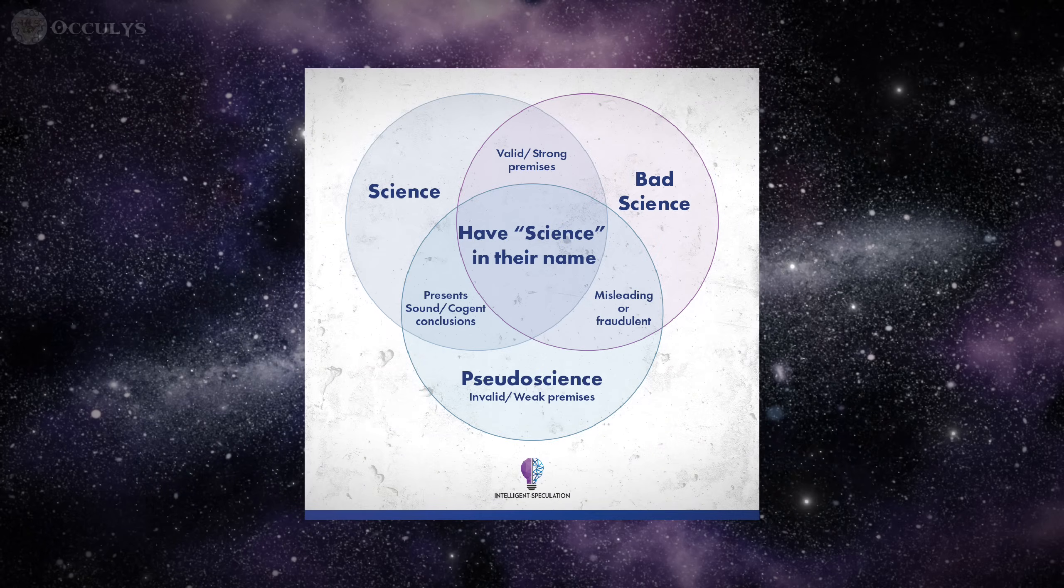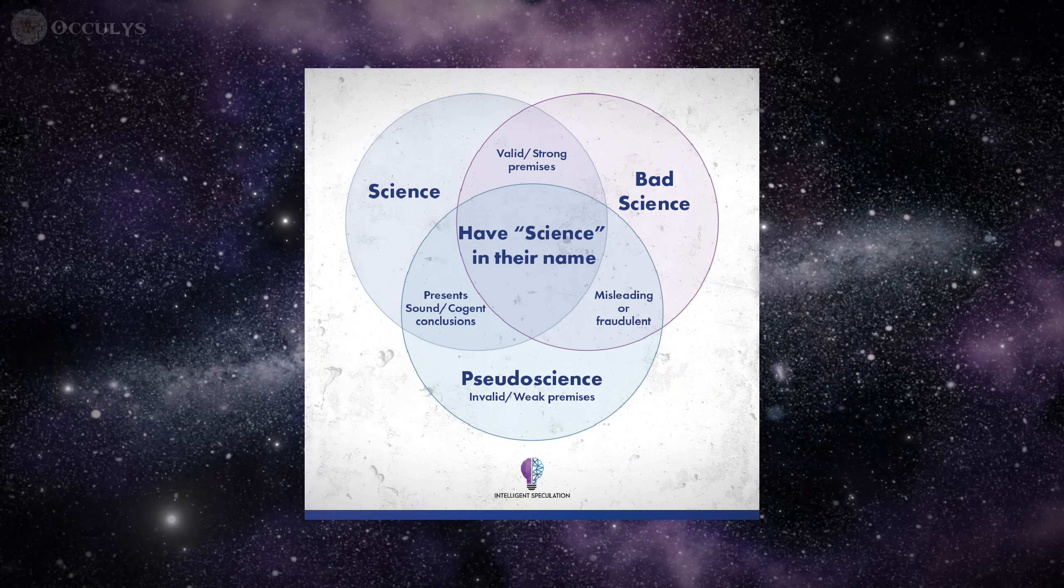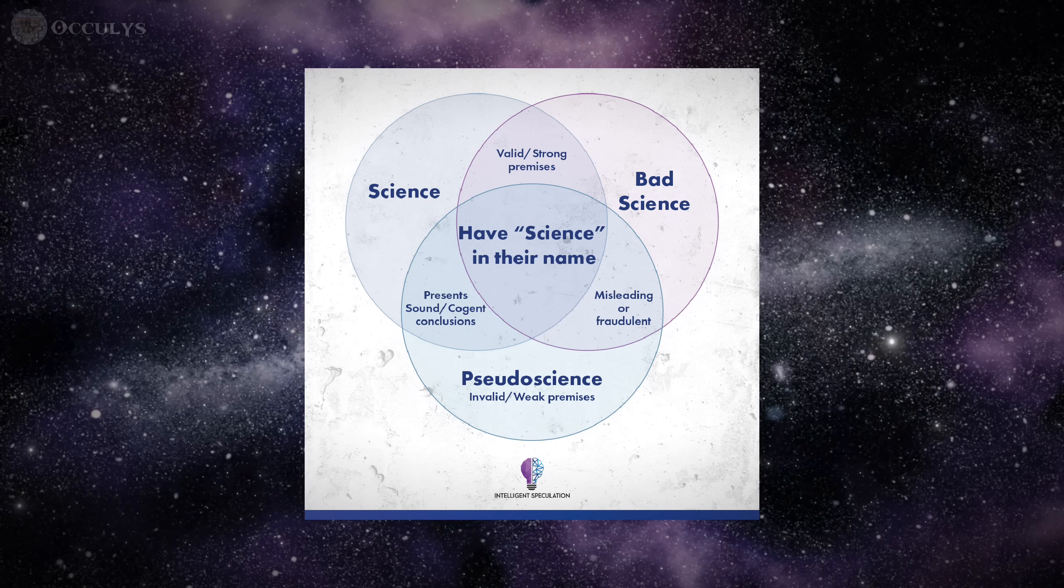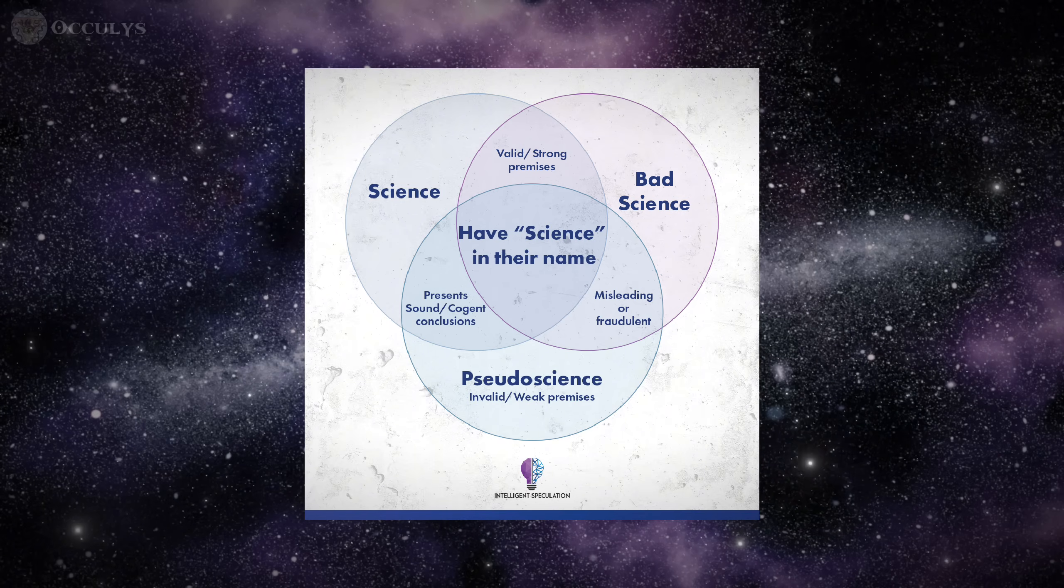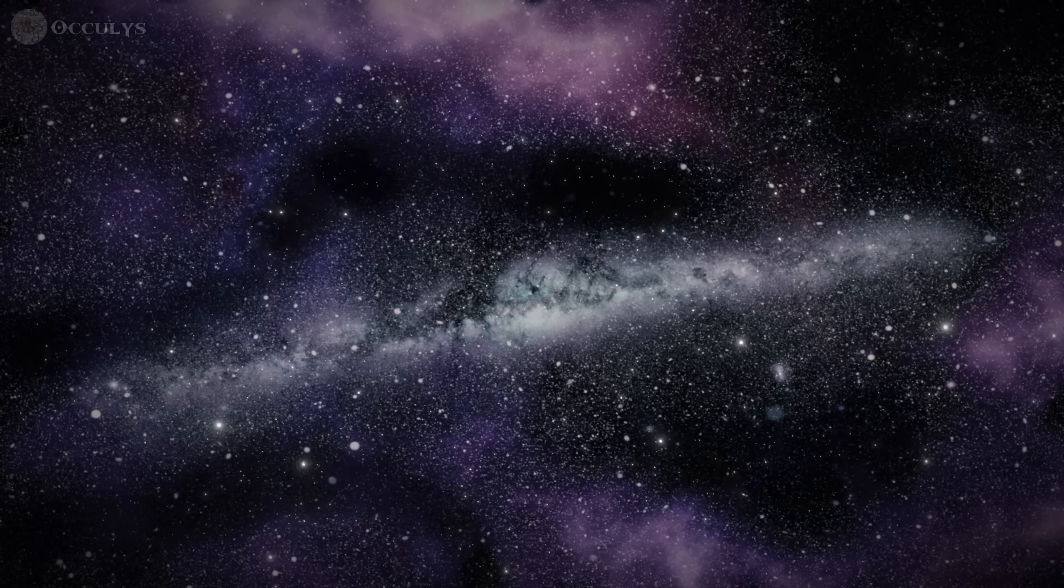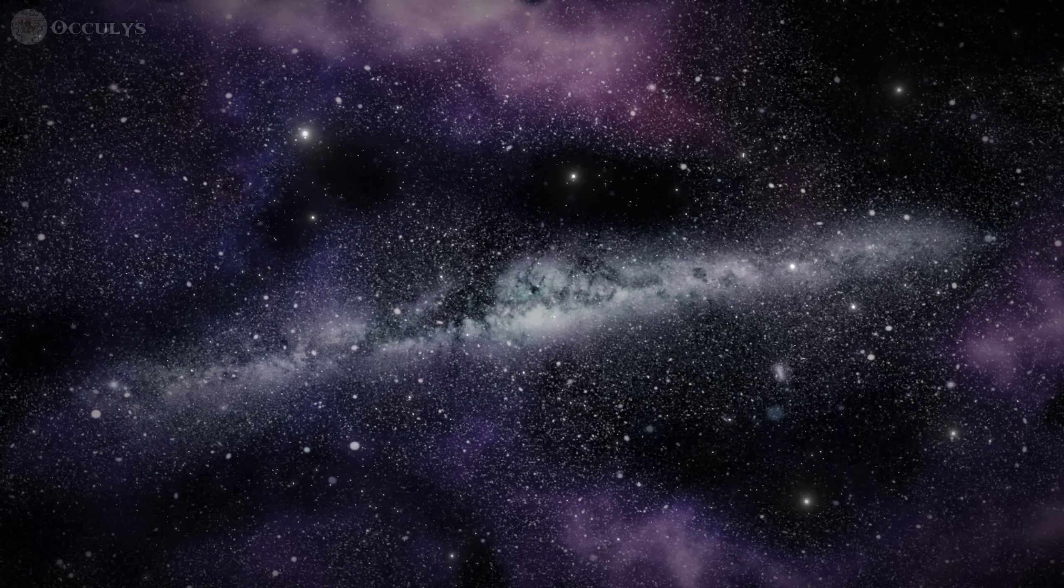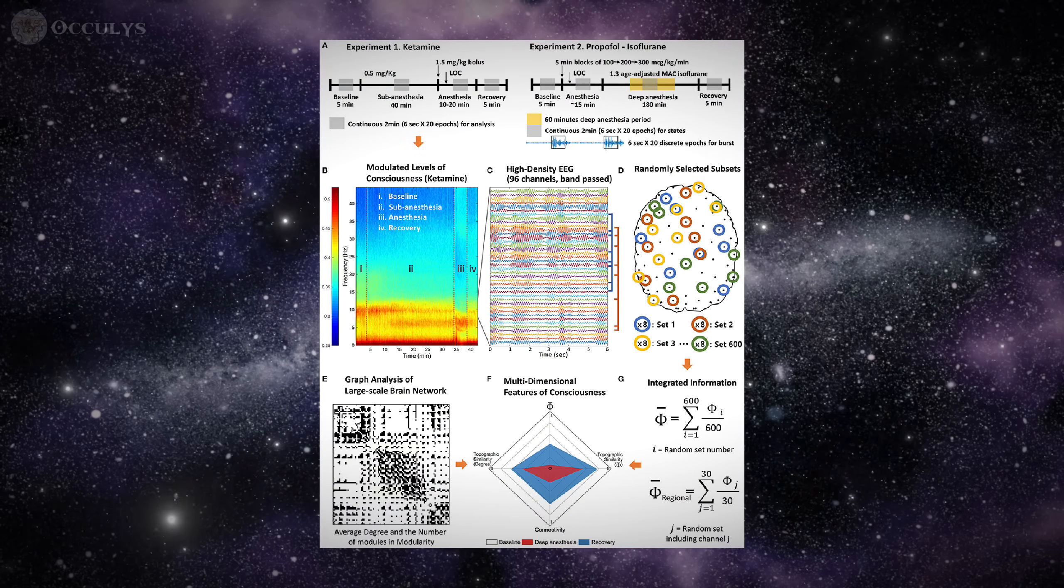Another common criticism is that panpsychism is unfalsifiable and therefore unscientific. The question of how one could ever prove or disprove that an electron possesses a primitive form of experience seems to place the theory beyond the reach of empirical testing. This objection may be premature, however, as modern frameworks like IIT offer a path forward. IIT makes specific, testable predictions.